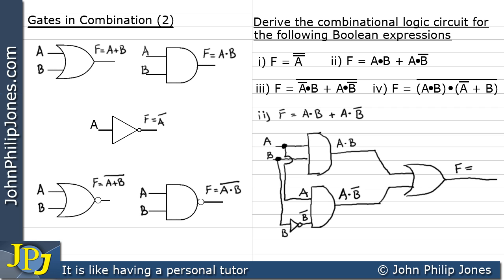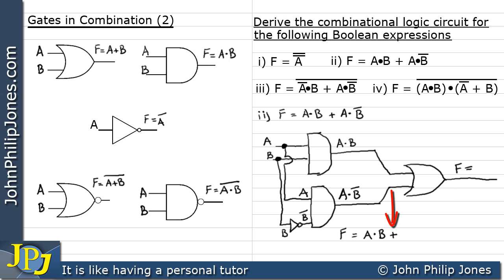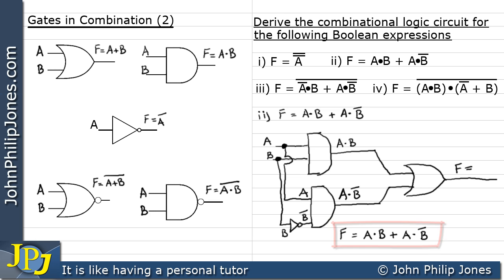F will equal its inputs: one is A AND B and the other is A AND NOT B, joined by the OR gate's OR symbol. So F equals (A AND B) OR (A AND NOT B). We've achieved what we set out to do — to produce the combinational logic circuit for this particular Boolean expression.